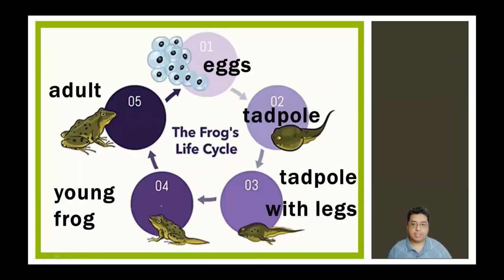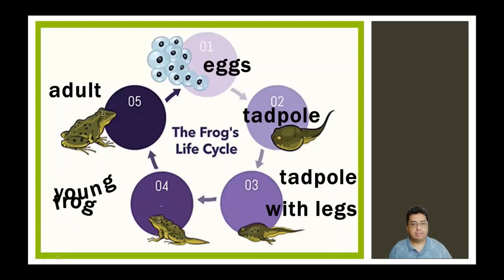Here's the life cycle of the frog. I've got each part labeled based on the stage it's in. For number one, that's known as the eggs. Number two is known as the tadpole. Number three is known as tadpole with legs. Number four is called a young frog. And for the fifth one, that's when it becomes the adult. So these are the five stages of the life cycle for the frog.